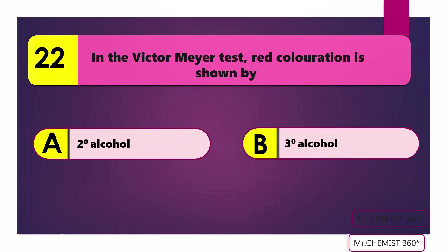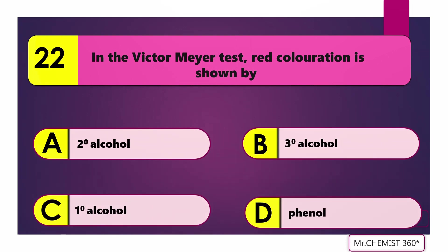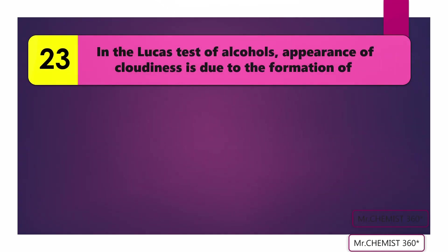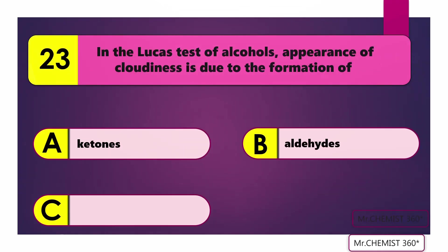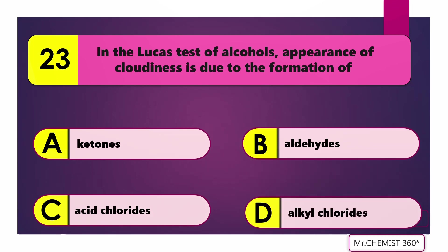Question 22: In the Victor Meyer test, red coloration is shown by? Answer: Primary alcohol. Question 23: In the Lucas test of alcohols, appearance of cloudiness is due to the formation of alkyl chlorides.